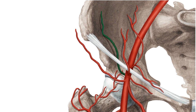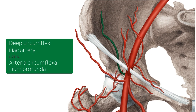Another artery arises nearly at the same level as the inferior epigastric artery but on the opposite side — this is the deep circumflex iliac artery, which arises from the lateral aspect of the external iliac artery. It should be noted that despite appearances in this image, the deep circumflex iliac artery is a branch of the external iliac artery, arising at the level of the inguinal ligament. It ascends obliquely and laterally posterior to the inguinal ligament, traveling to the anterior superior iliac spine where it anastomoses with the ascending branch of the lateral femoral circumflex artery.